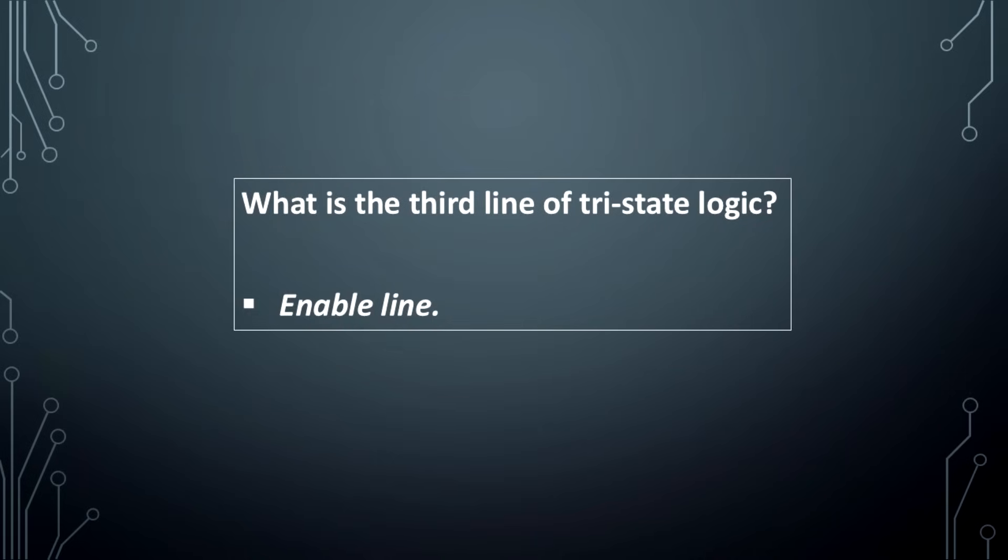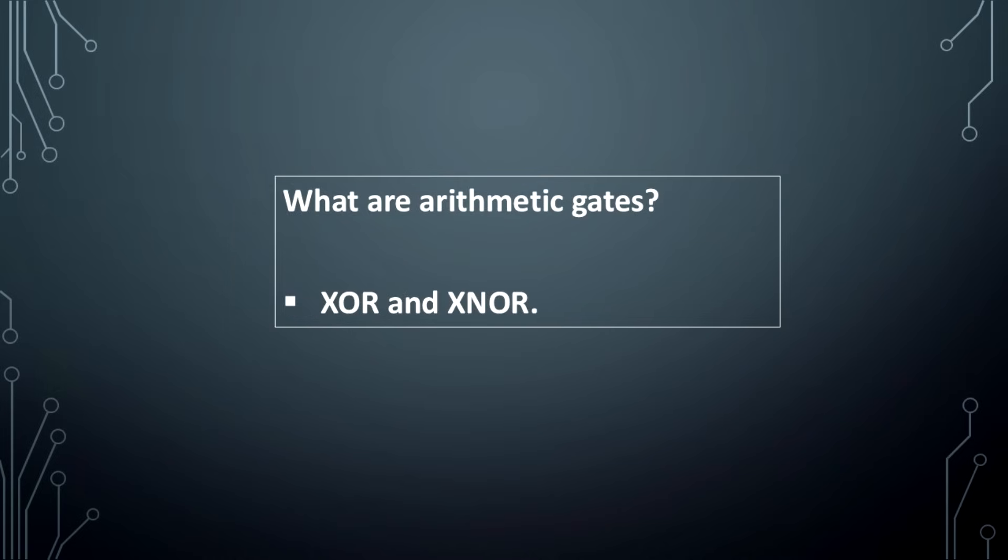What is the third line of tri-state logic? The third line in tri-state logic is the enable line.